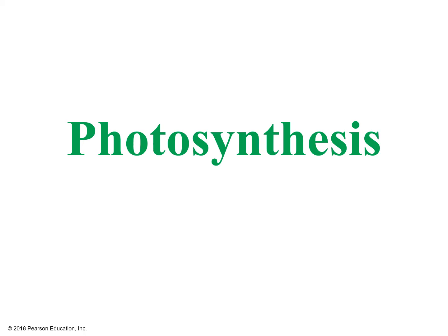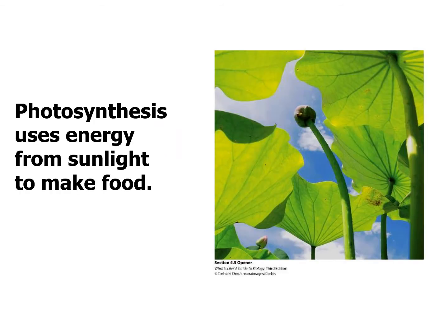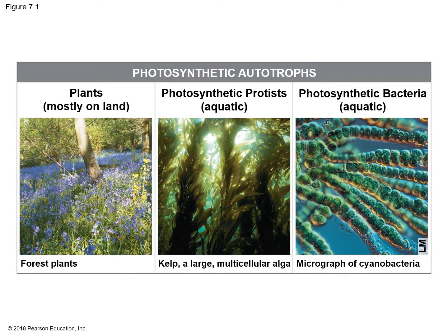Today we're going to talk about the process of photosynthesis. Plants can use energy from sunlight, water, and carbon dioxide and convert that into sugar glucose. They have the ability to make their own food, whether those plants are on land or aquatic plants.